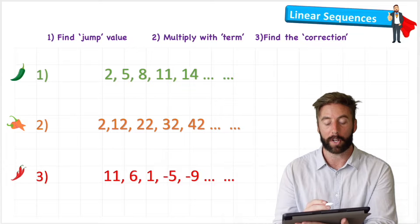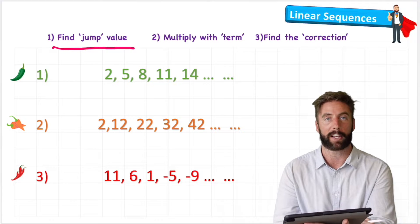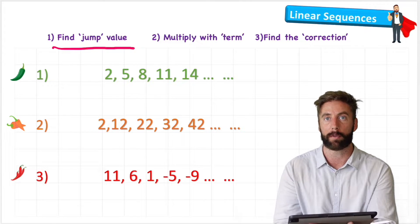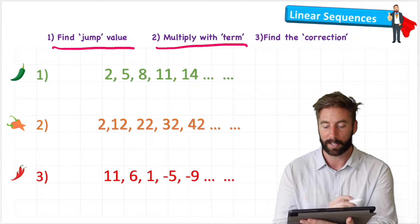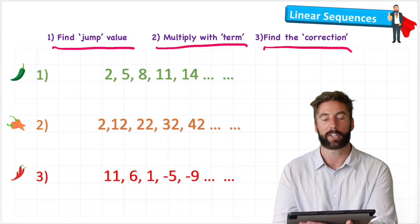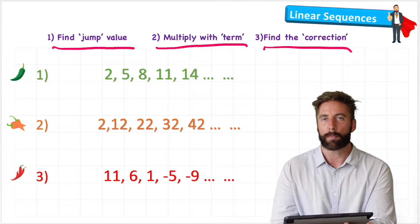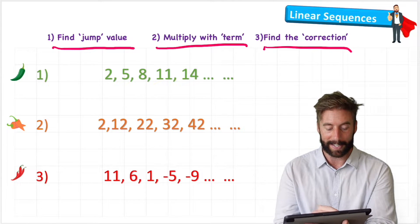So first we're going to find the jump value, the value of the difference between the numbers in our sequence. Then we're going to multiply it by the term and we're going to understand what that means, and then we're going to find the correction. So that probably doesn't mean too much to you at the moment, that's all right, that's what we're going to look at here today.